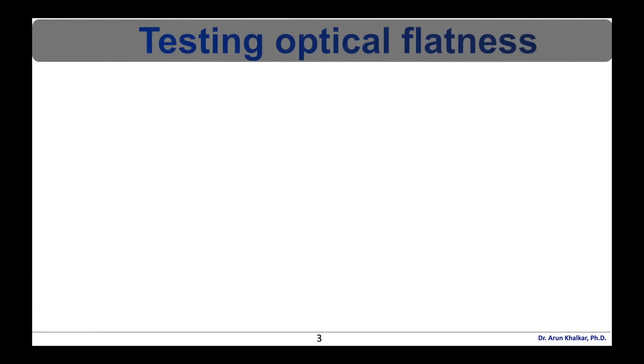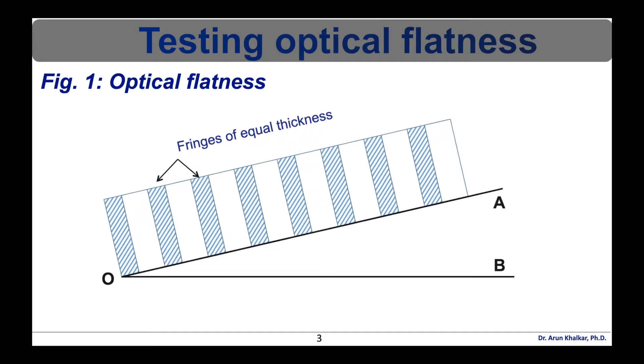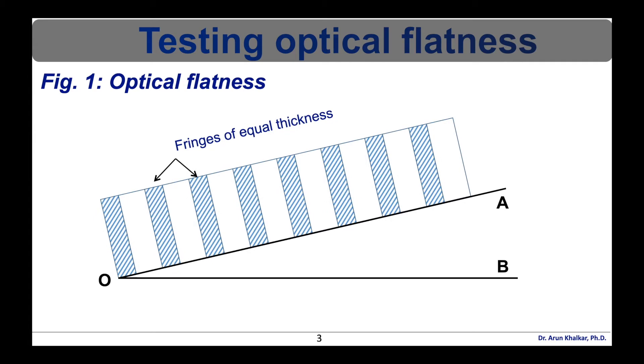Let's see first application of interference that is testing optical flatness. Among many different types of tests for optical surface quality, a few that gained popularity amongst amateur are the Foucault test, Ronchi test, Venue null test, Hindle spear test, Dole and Ross null test, Hofner null test, double pass test and more recently interferometric tests.